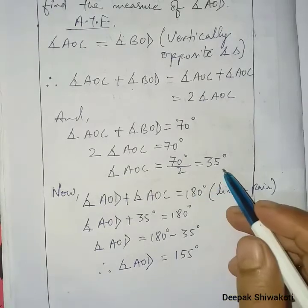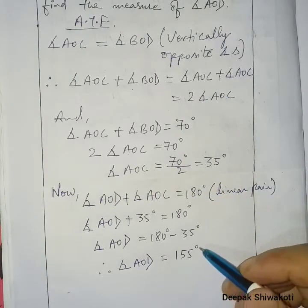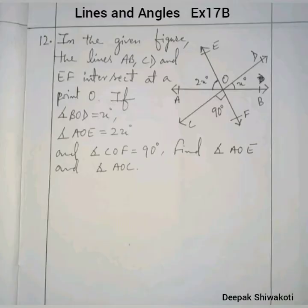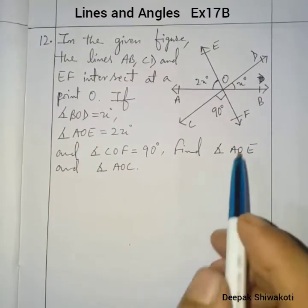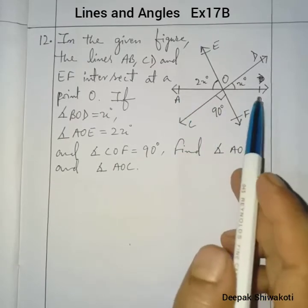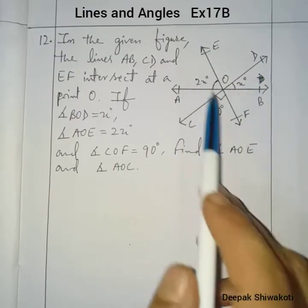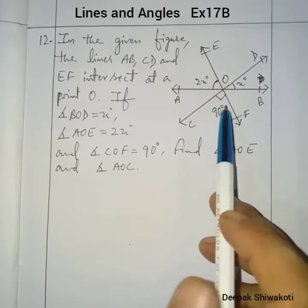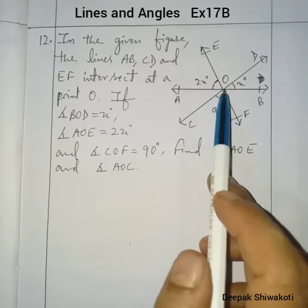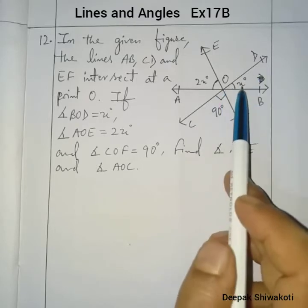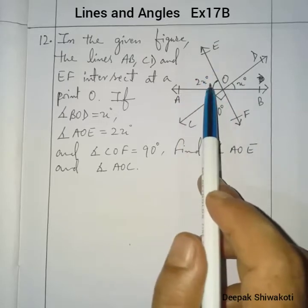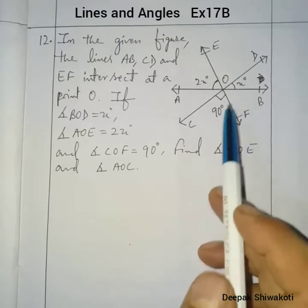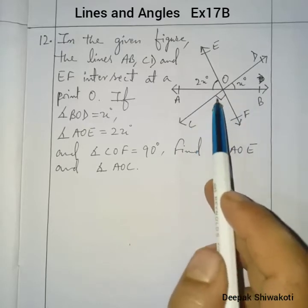So we have found angle AOC and angle AOD. Now question number 12. In the given figure, the lines AB, CD, and EF intersect at point O. Angle BOD is equal to x degrees, angle AOE is equal to 2x degrees, and angle COF is 90 degrees.